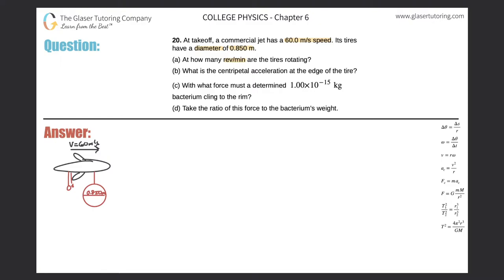Knowing we're solving for omega, we choose the best equation from the right-hand side. I'm given a velocity and a diameter, so I have velocity and radius, which relates to omega. That formula is v = rω. We want to solve for omega, so we divide both sides by r, giving us omega = v divided by r.